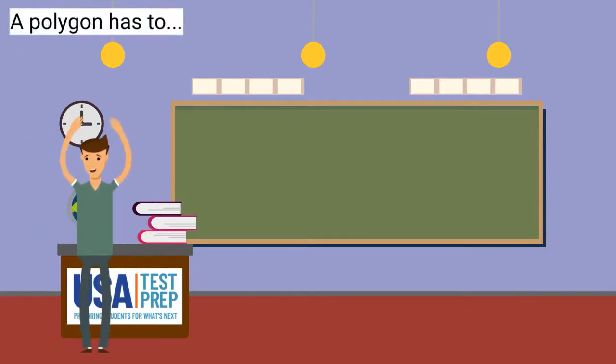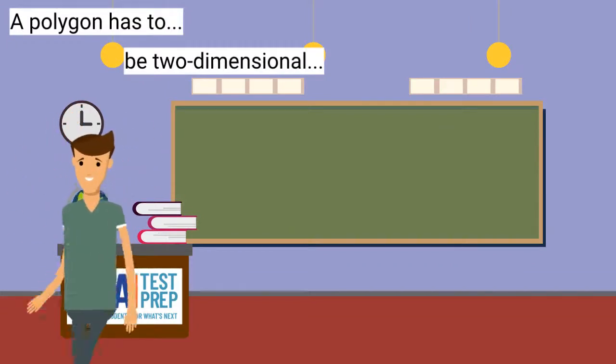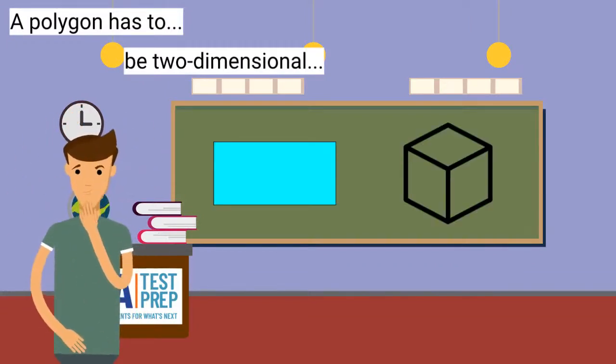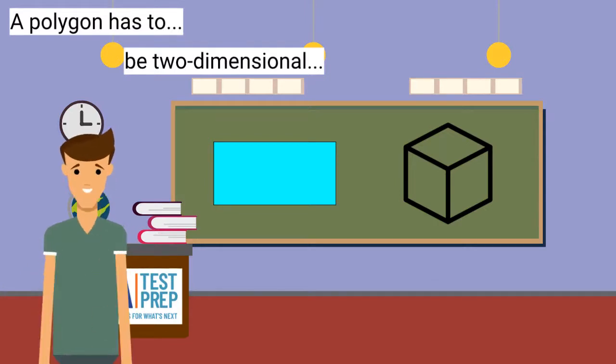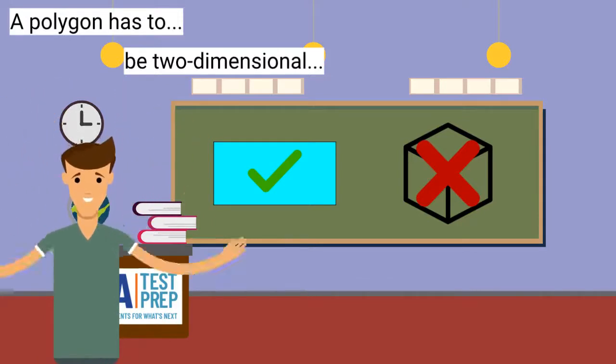A polygon is a flat shape or two-dimensional. Look at these two figures. Which figure is a polygon because it is two-dimensional? This figure is a polygon because it is flat.